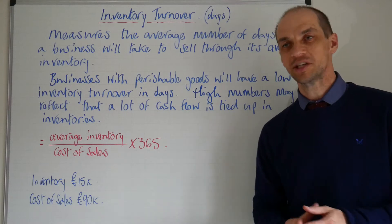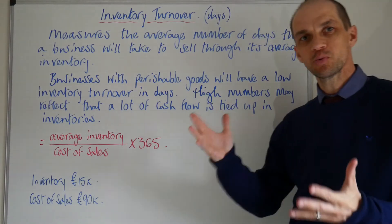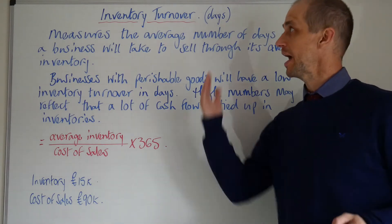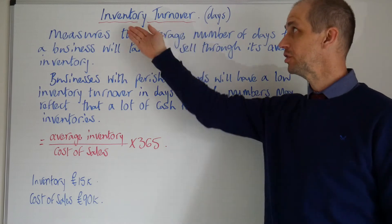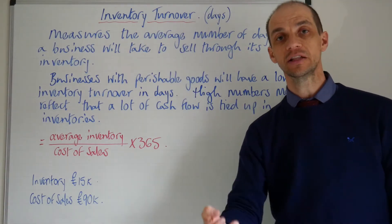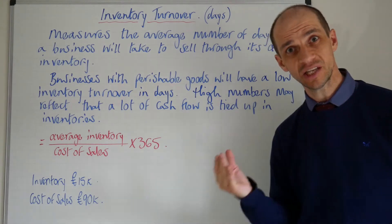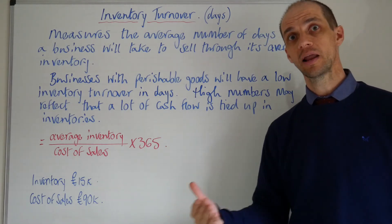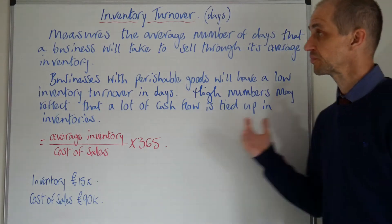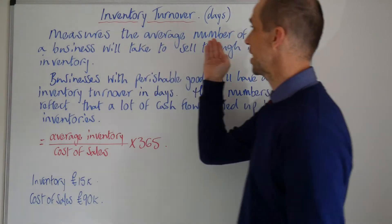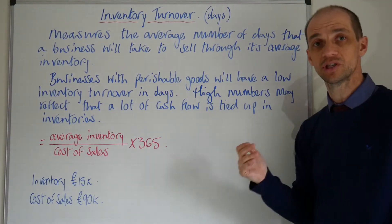The last of our efficiency ratios is the inventory turnover in days. This one really helps us to understand how quickly a given business is actually turning over its inventory, its average stock holding — how quickly they are actually selling through their stock level and how many days it takes them to sell through that stock. This measures the average number of days that a business will take to sell through its average inventory.